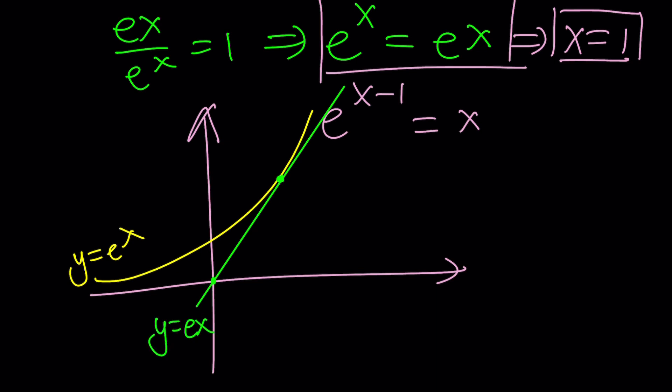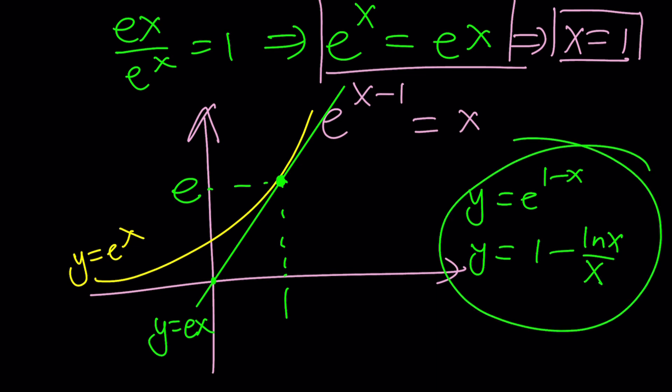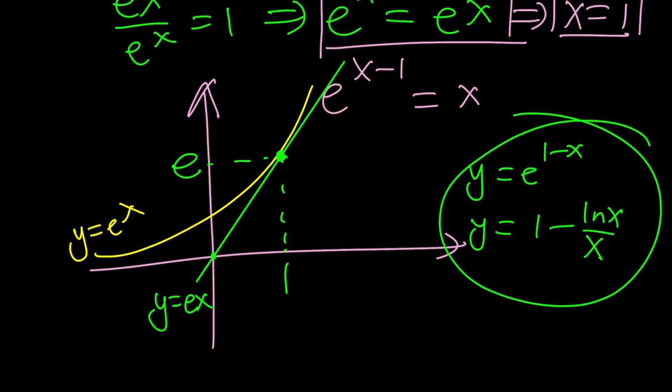Kind of like y equals x with a slope of e. Oh, did I say slope? Yes. Do you know why these graphs are tangent? Because their derivatives are equal at x equals one. And their y values are also equal. That's why they are tangent, which means there's only one solution. You can also graph y equals e to the power one minus x and y equals one minus ln x over x. And you should also realize that they intersect at one point. Go ahead and check it out and let us know.